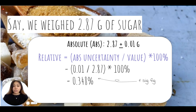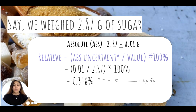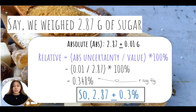We only use one significant figure because the absolute uncertainty of 0.01 was reported to only one significant figure. This means our percent uncertainty — our relative uncertainty — also needs to be reported to one significant figure; it can't be more than that. So in total, our relative uncertainty becomes 2.87 grams plus or minus 0.3%.